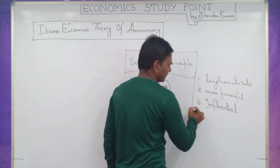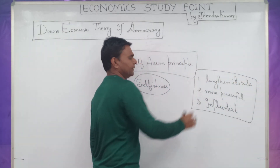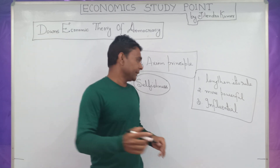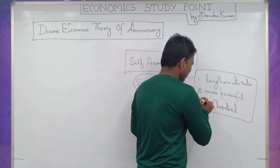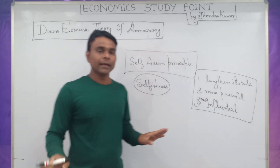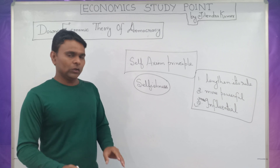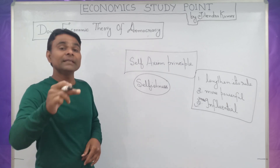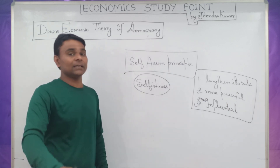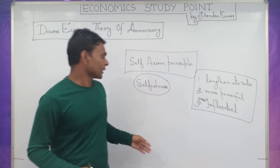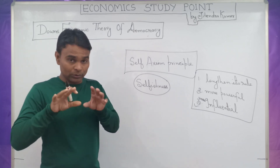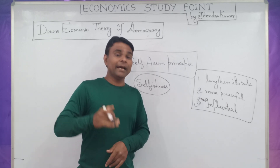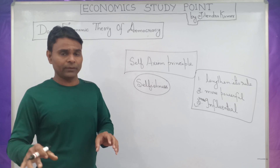There are three objectives for any political party: first, to want to rule for a longer period of time; second, to be more powerful; and third, to be more influential by maximizing income and wealth. Therefore, the ruling party follows the policy to win the election, rather than beginning the election to follow policy. All political parties try to impress voters at the time of election through their manifesto.